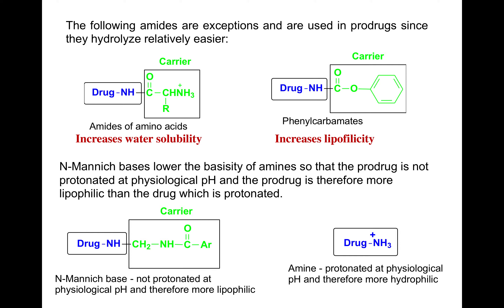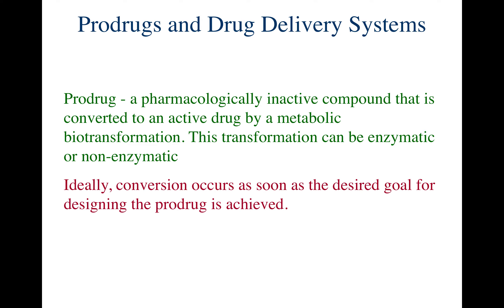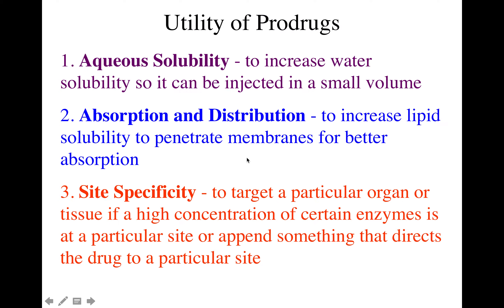Those are just some examples of where amide prodrugs can be used. Going back a bit now, I want to specifically discuss carrier-linked prodrugs and give you some examples of carrier-linked prodrugs currently on the market. Just to recap: a prodrug is a pharmacologically inactive compound that is converted to an active drug by metabolic biotransformation, which can be enzymatic or non-enzymatic.